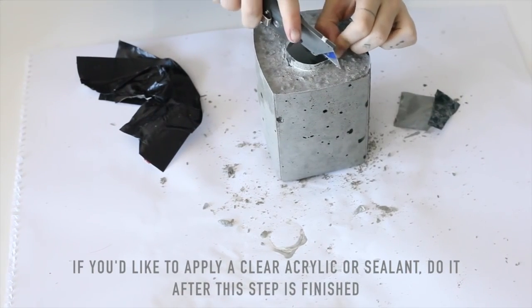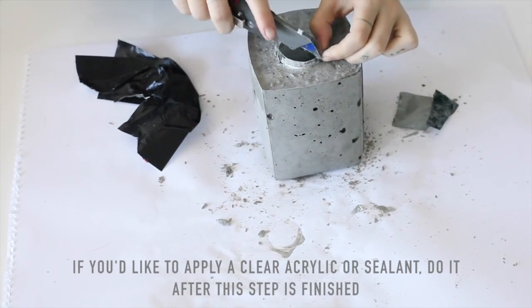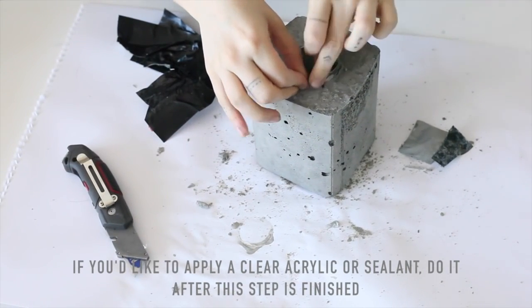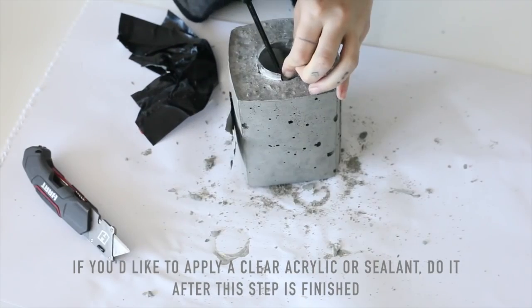Now you're going to take your box cutter, scissors, or even a sharp knife, and you're going to put some small slits all around the opening of the inner bottle. And then you're going to start to peel the plastic down and away from the concrete.